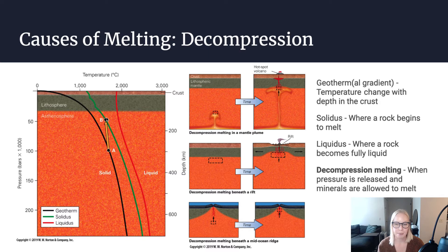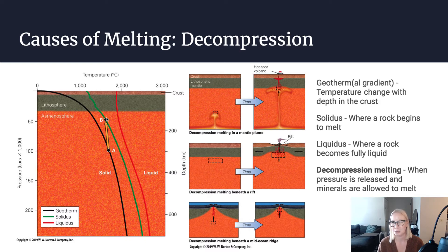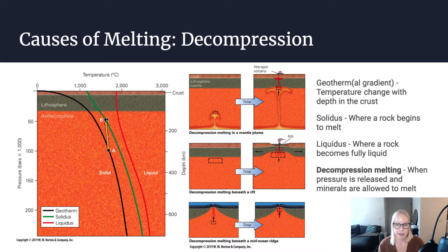One of these is at a mantle plume or hotspot volcano like Hawaii, where the crust is relatively thin — there's not a lot of mass above the mantle — and it allows decompression melting to occur. You would also expect decompression melting beneath rifts, where two continental plates are beginning to pull apart and being stretched very thin, allowing up-warping of the asthenosphere and decompression of the mantle. You would also expect decompression melting below a mid-ocean ridge, where the oceanic crust has split, relieving pressure and allowing the rock to melt.